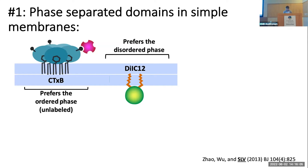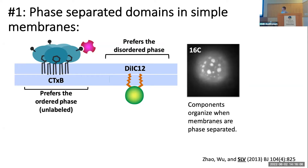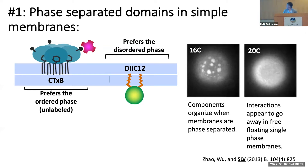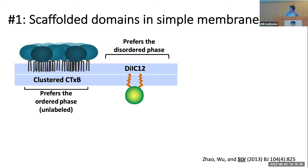Starting simple — we start off with just vesicles again. We can do experiments where we label a variety of things. In this case, these are labeled with a fluorescent probe called DiIC12, which is a lipid with a fluorophore on it. We can look at our vesicles when they're phase-separated and see this probe condense into higher concentration regions — these phase-separated regions. But if we look at a different temperature or set of conditions, we can make those domains disperse, and it looks uniform. This is just typical, normal phase separation.